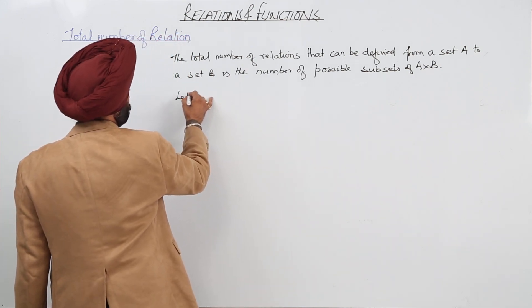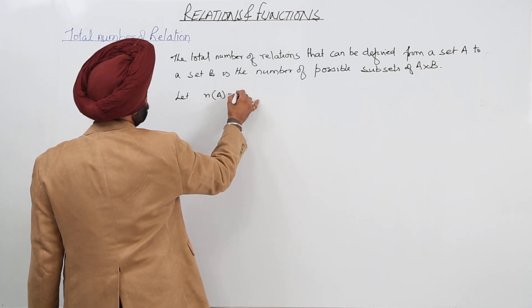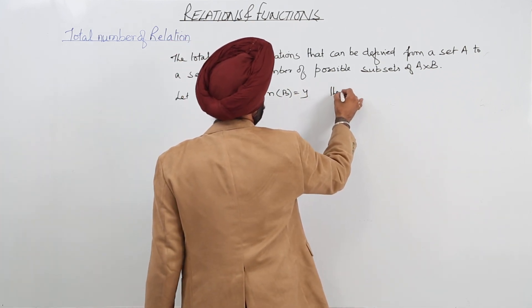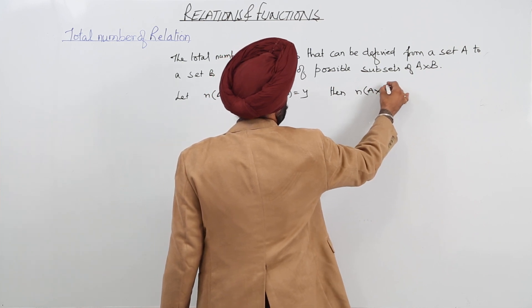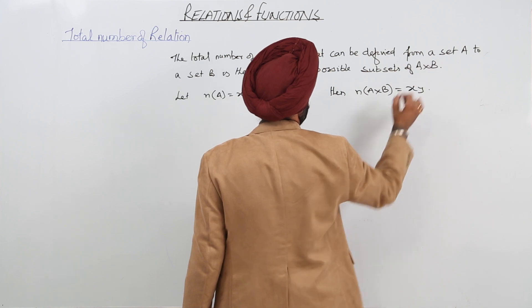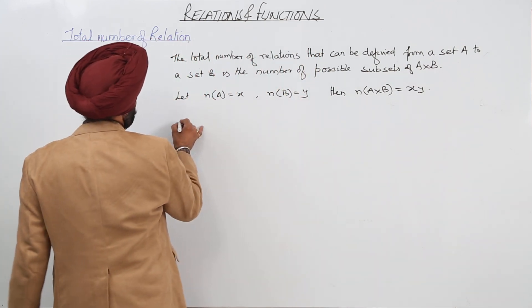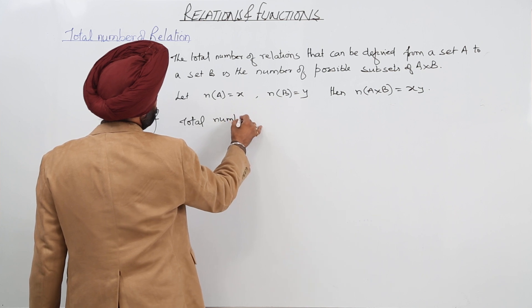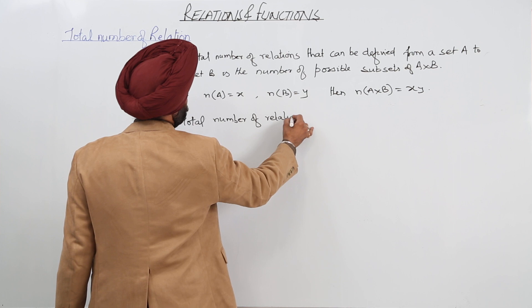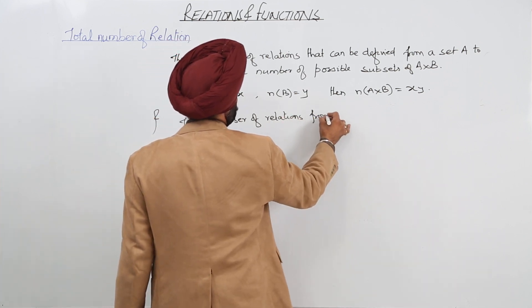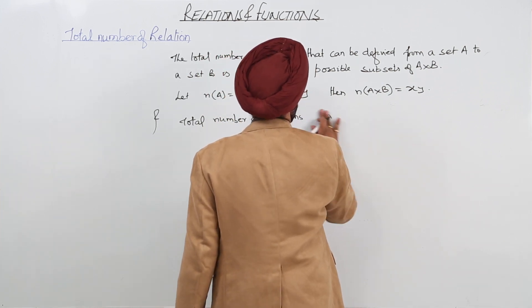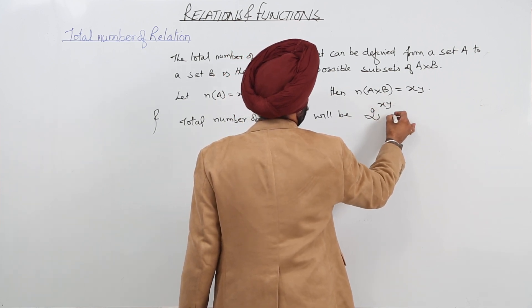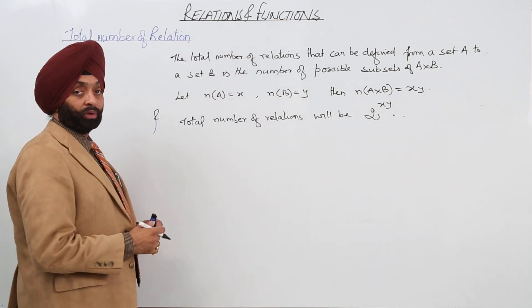Let the number of elements in set A be X, and the number of elements in set B be equal to Y. Then A cross B will have X times Y elements. The total number of relations will be 2 raised to the power X times Y. This is the total number of relations.